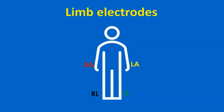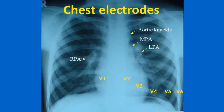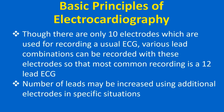ECG uses four limb electrodes on each of the four limbs, of which the electrode on the right leg is considered electrically neutral while the other three are active electrodes. In addition, six electrodes are placed on specifically designated parts of the chest to get chest lead recordings. Though there are only 10 electrodes used for recording a usual ECG, various electrode combinations can be recorded so that the most common recording is a 12-lead ECG. The number of leads may be increased using additional electrodes in specific situations.